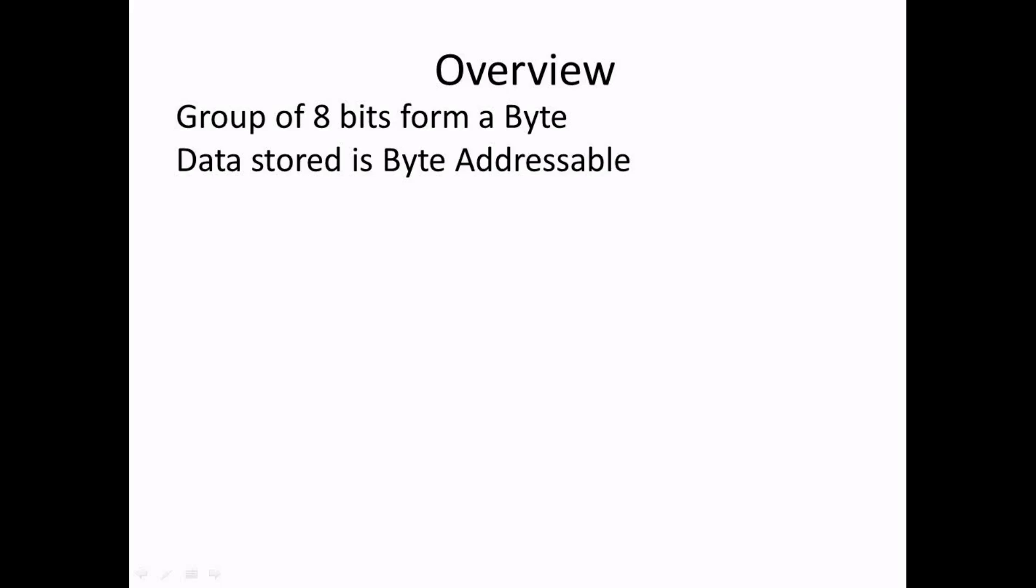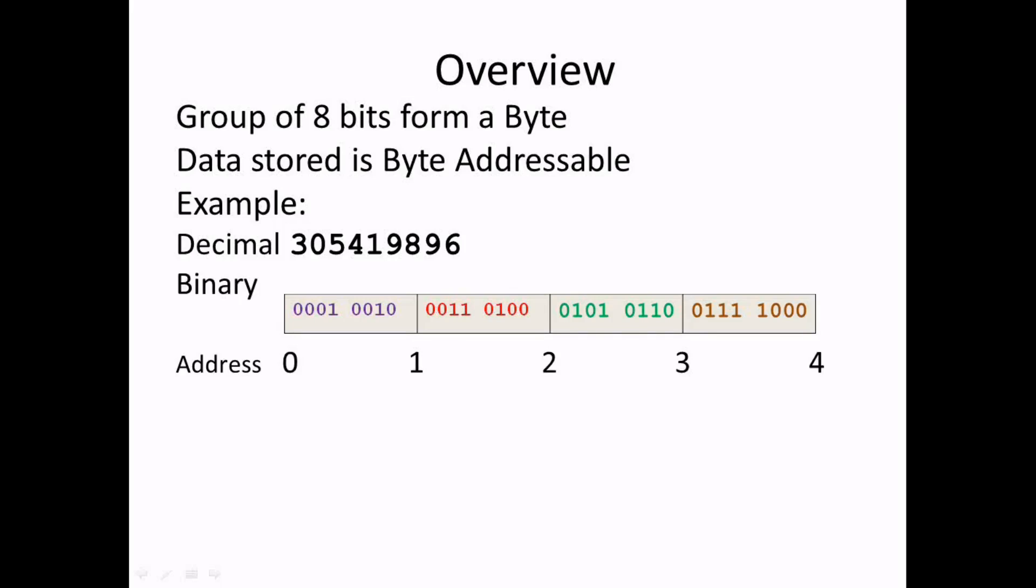Consider this decimal number 305419896, which can be written as 00010010 00010101 10011110 00000 in binary, or 1 2 3 4 5 6 7 8 in hexadecimal notation. There are two ways we can save this number in memory.